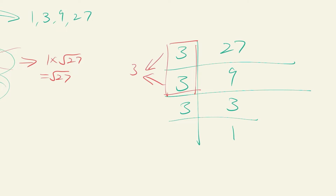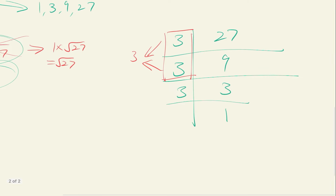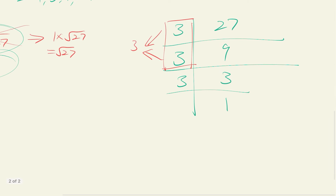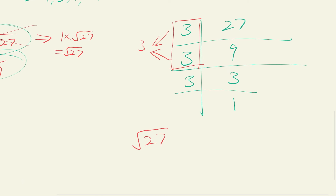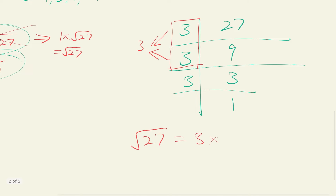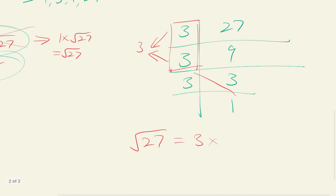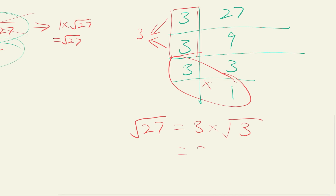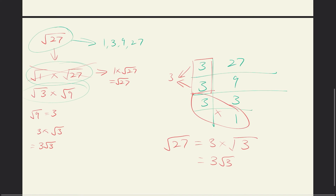From the ladder, we can see we have a set of two 3s — those two together make one whole 3 outside the root. The remaining 3 stays inside the square root, so square root 27 equals 3 times square root 3, which matches our first method.